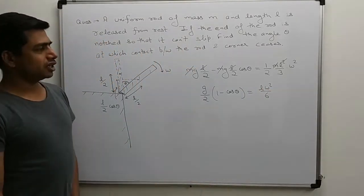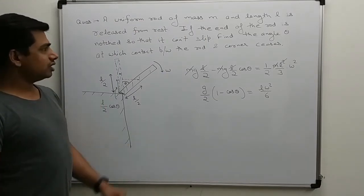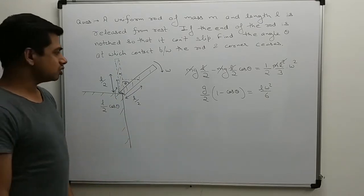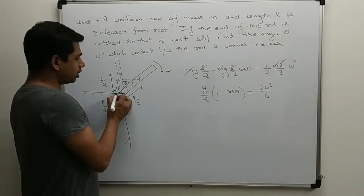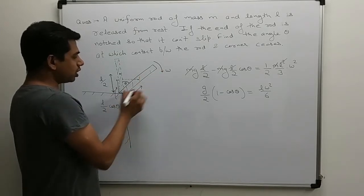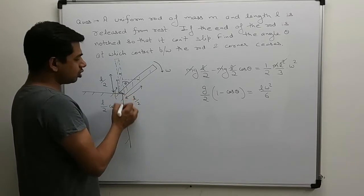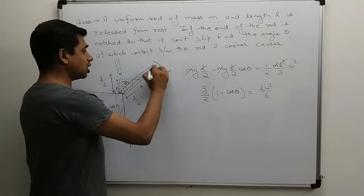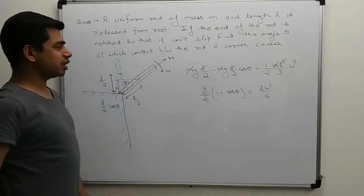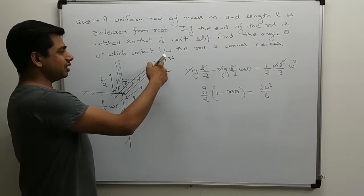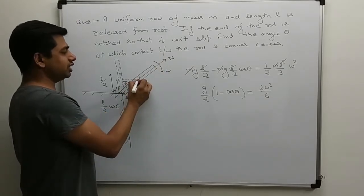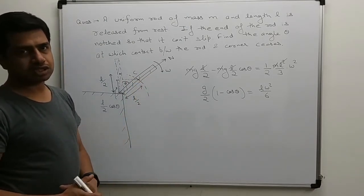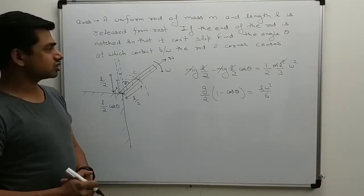Now what do we have to find? Normal should be zero. Contact will be lost. Seizes means contact is lost, meaning normal is zero. Important point: where the corner is, corner is also an edge and rod is like a surface. When any edge and surface are in contact, normal is perpendicular to surface. Here normal will be applied perpendicular to rod's surface.